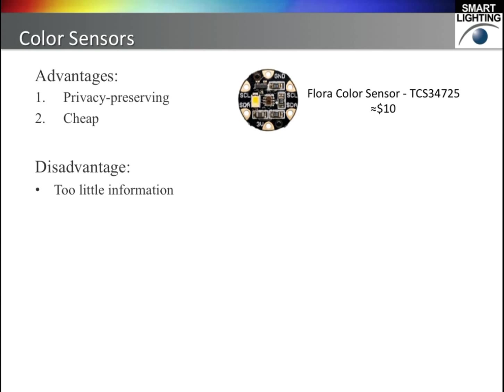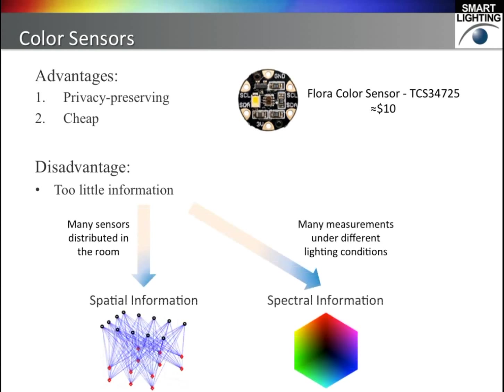This is the reason why we propose using color sensors. Color sensors only output a few numbers, thus it is safe — no privacy concern. Besides, these sensors can be very cheap. The problem is that there is really too little information from the readings of a single color sensor. However, we can use many sensors and make many measurements. When multiple sensors are distributed in the room, we can gather spatial information. And when multiple measurements are made under different lighting conditions, we gather spectral information.